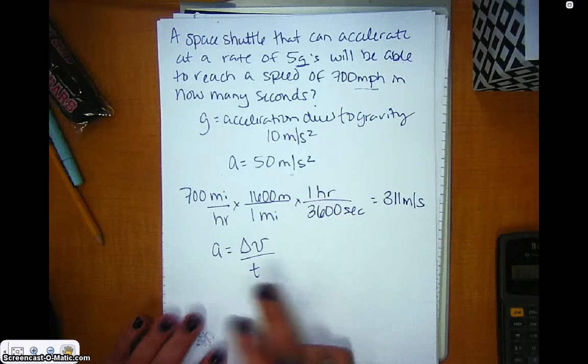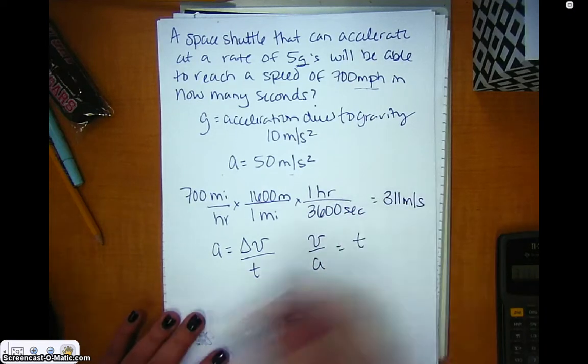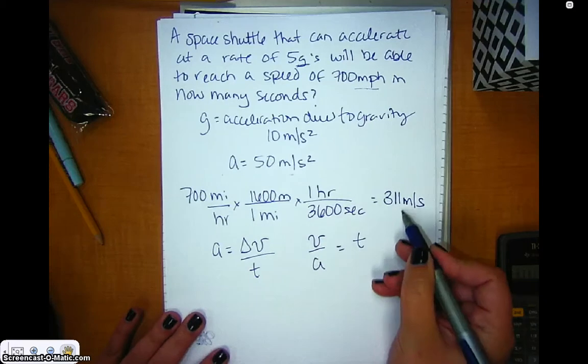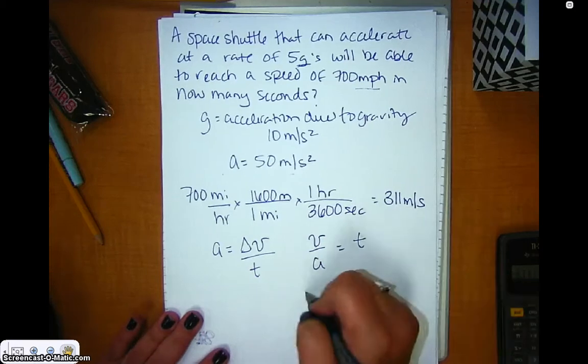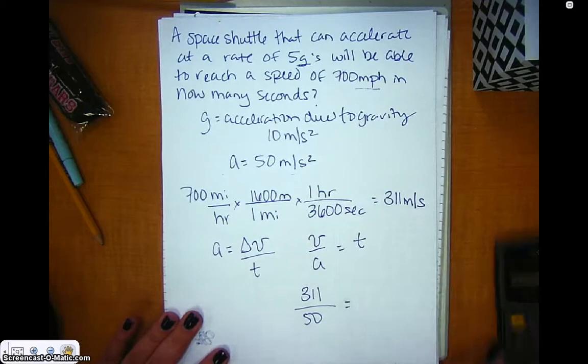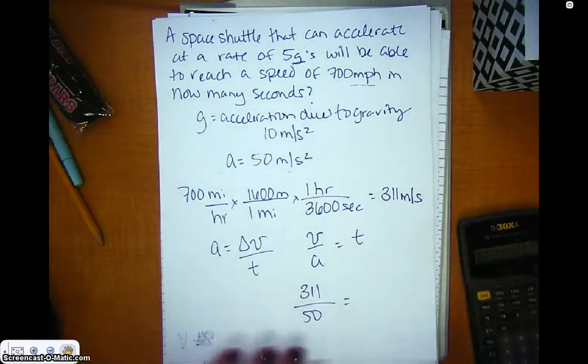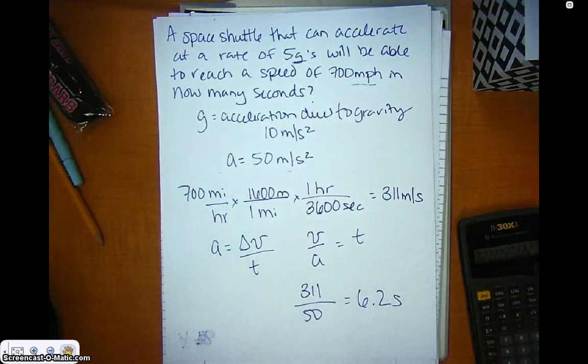I'm going to solve for T. That means velocity over acceleration equals T. The change in velocity is from 0 to 311, so 311 divided by 50. In order to reach that velocity, it would take 6.2 seconds.